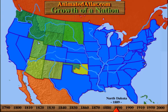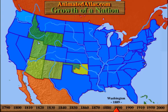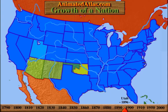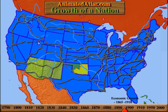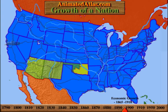In 1889, North Dakota, South Dakota, Montana, and Washington were admitted. In 1890, Idaho and Wyoming were admitted. The Mormon settlement became the state of Utah in 1896. Railroads interconnected the continent. The population expanded and the economy grew, such that by the early 20th century, the United States was the leading industrial power of the world.